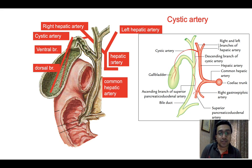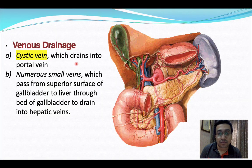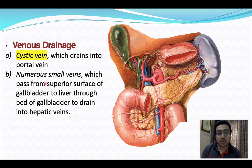The left hepatic artery and right hepatic artery give rise to the cystic artery, which divides to form the ventral and dorsal branches — also referred to as superficial and dorsal in some books. For venous drainage, it is primarily via the cystic vein, which drains into the portal vein. There are also numerous small veins passing from the superior surface of the gallbladder through the bed of the gallbladder to drain into the hepatic veins.